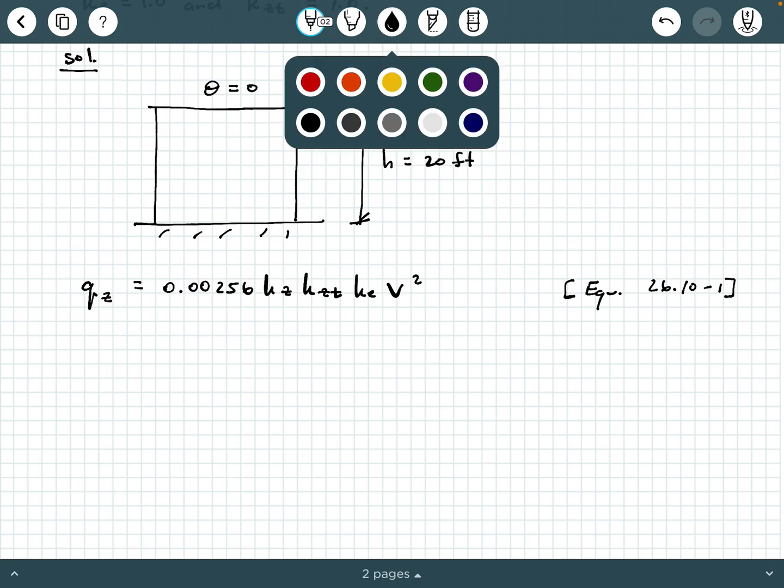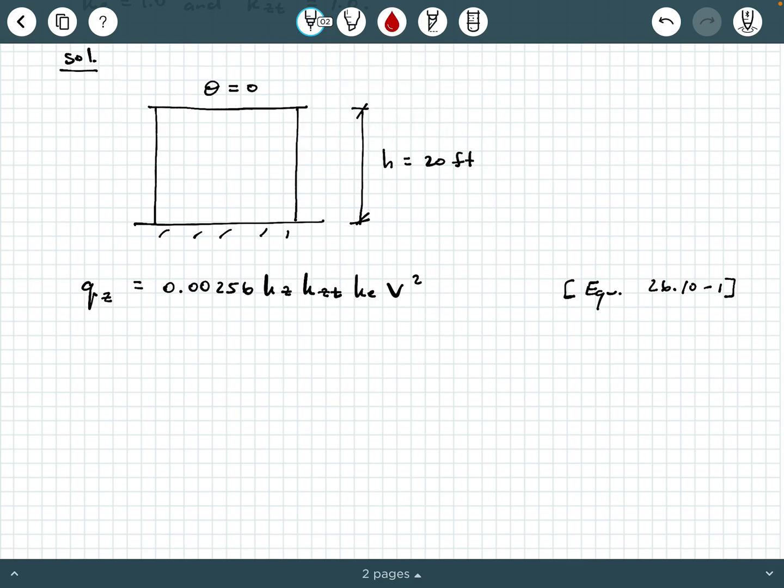Now, we were already told what a couple of these coefficients are. KE is 1.0, and KZT is also 1.0. So we really just need to get a couple other things.